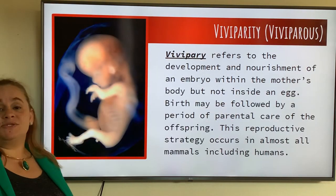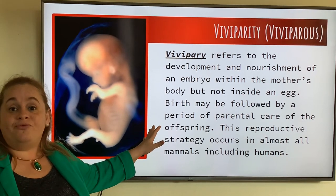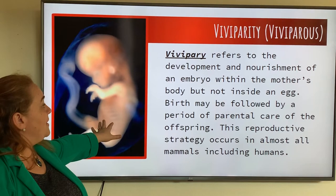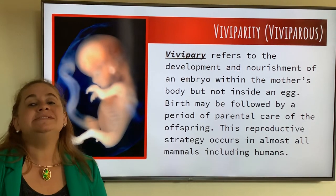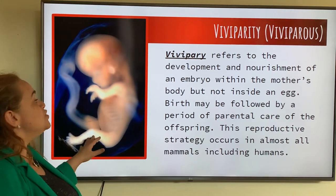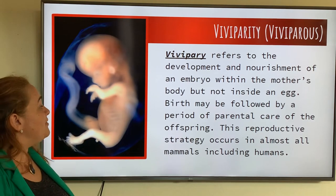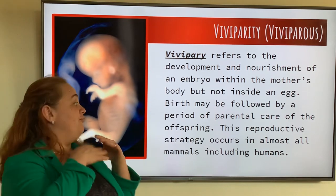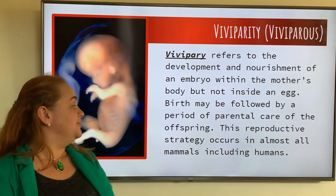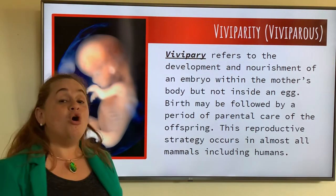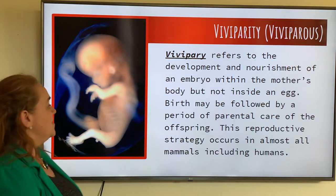The third strategy is the one that applies to us humans. This is viviparous. This refers to the development and nourishment of the embryo inside the mother's womb — not an egg at all. The birth may be followed by a period of parental care for the offspring. This reproductive strategy occurs in almost all mammals, including us humans.